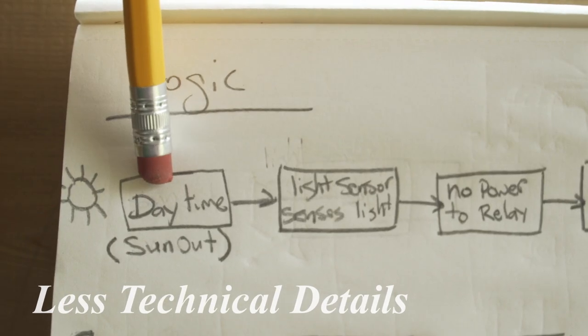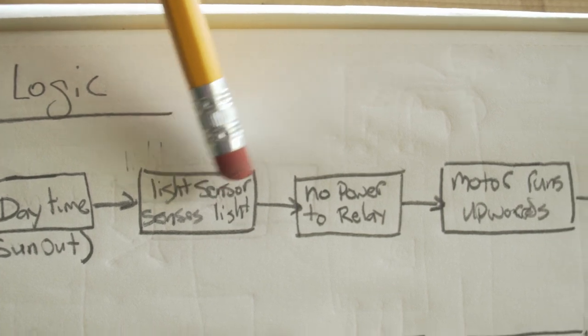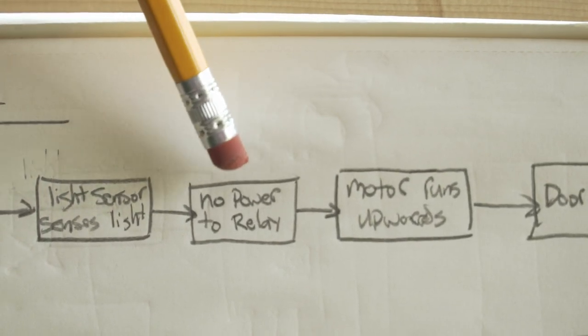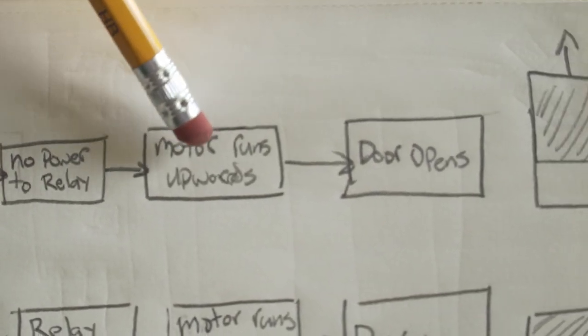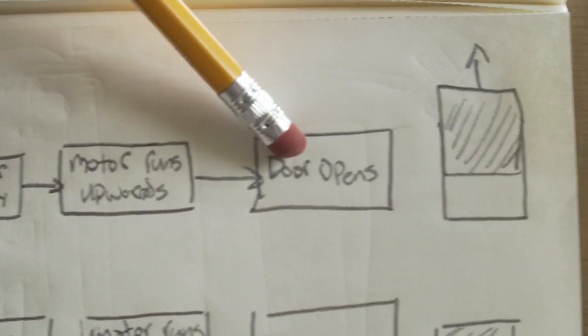During the day, the sun will be out, and the light sensor will sense that there's light. This will cause the dual-pull, dual-throw relay to not have any power, which will make the motor turn in the upwards direction, causing the door to open.